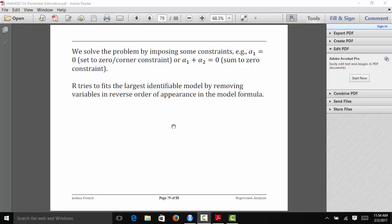What you do in practice to solve this for designed experiments is you impose some constraints on your parameters. You might set one of the parameters equal to 0, so alpha 1 equals 0. This is known as the set to zero or corner constraint. Or you might say that their sum equals 0, so alpha 1 plus alpha 2 equals 0. That's known as the sum to zero constraint.